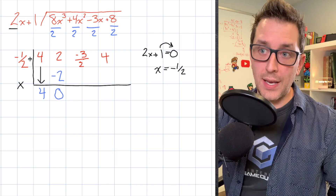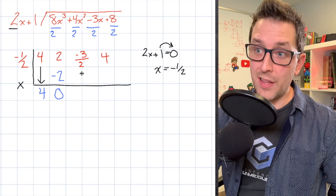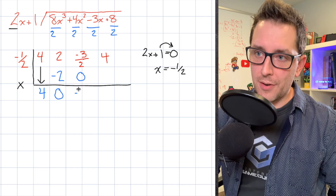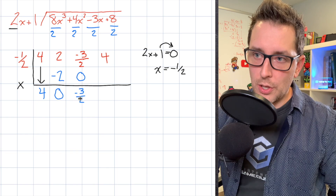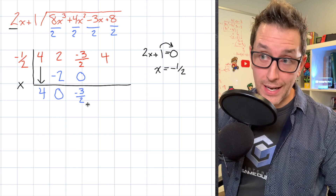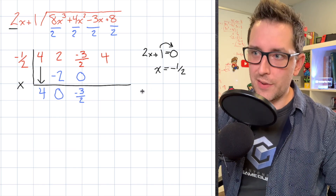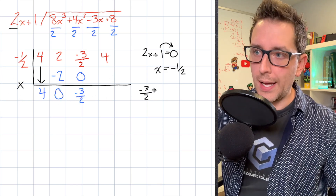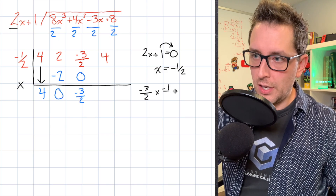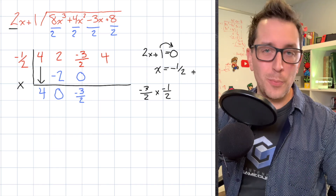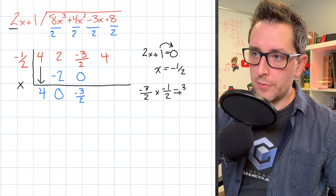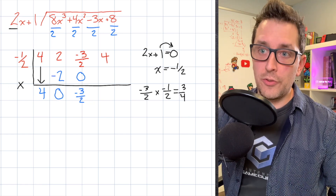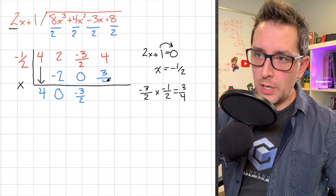We take that 0, multiply by negative 1 half, and place the result here. Since 0 times anything is 0, we add straight down and end up with negative 3 over 2. For the next step, I'll write it off to the side: we take negative 3 over 2 and multiply it by negative 1 half. When you multiply fractions, multiply numerator by numerator and denominator by denominator, giving us 3 over 4. That 3 over 4 goes underneath our last value in the table.